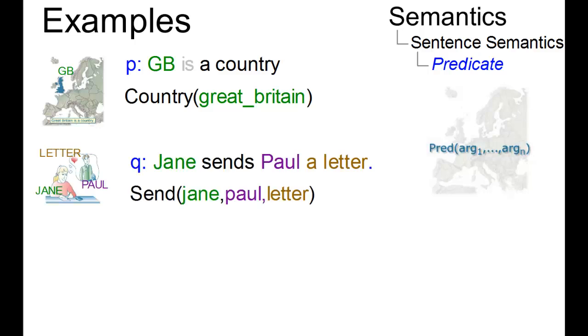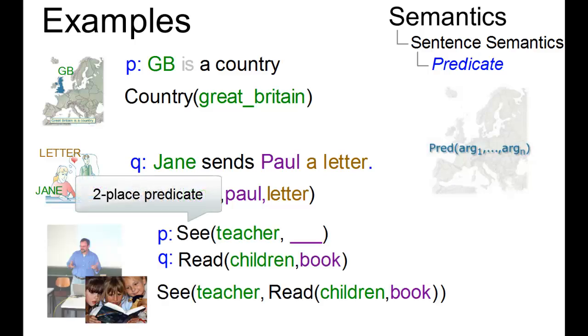The second predication is complex. It has a three-place predicate, where some relationships between the entities denoted by the arguments are represented, as in Jane sends Paul a letter. And the last predication involves the two-place predicate,